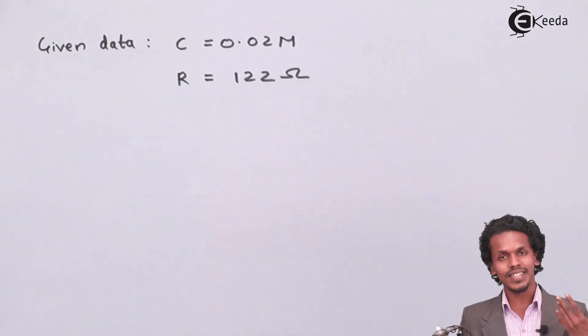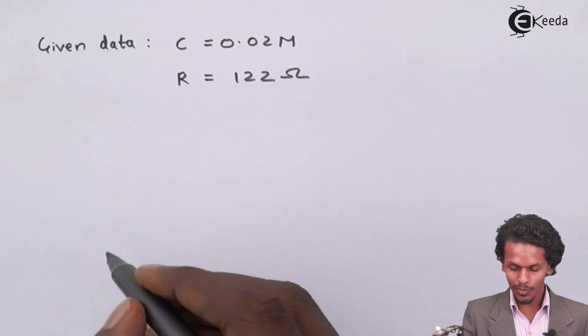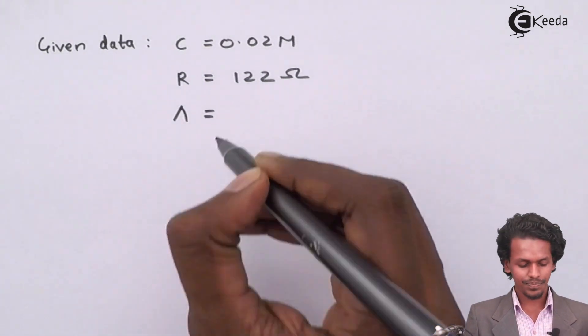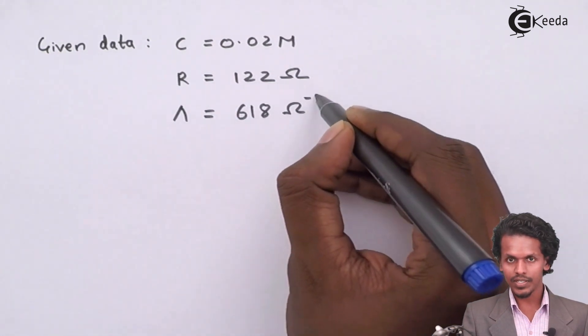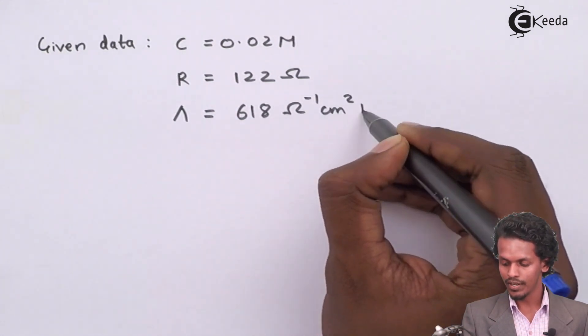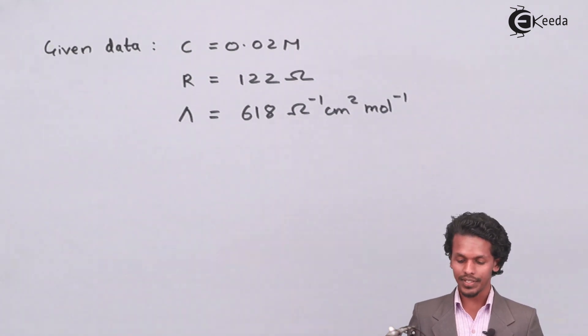The molar conductivity of the same solution, that is 0.02 molar solution, is given as 618 ohm inverse centimeter square mole inverse. The thing that we have to calculate here is the value of b, that is cell constant.